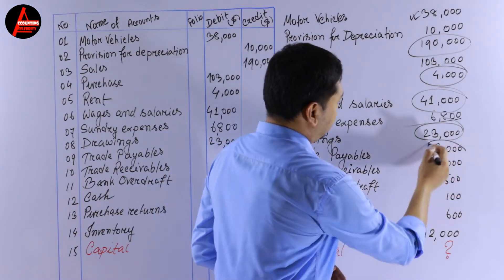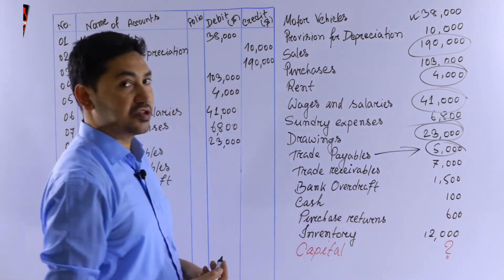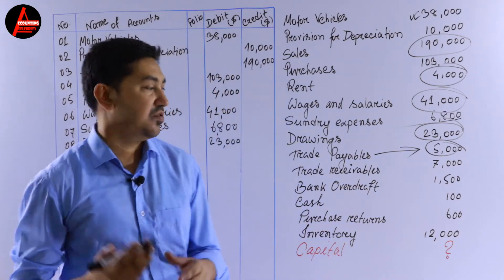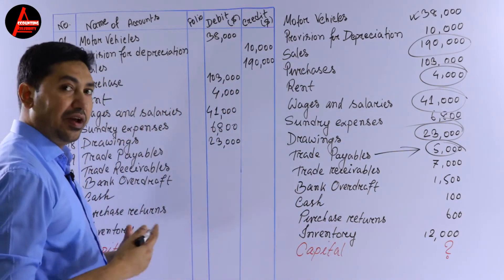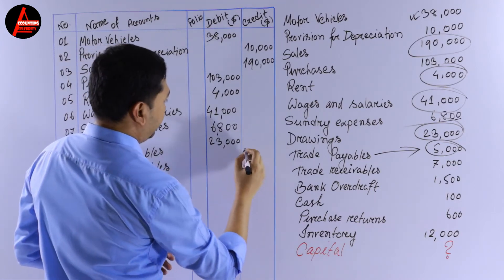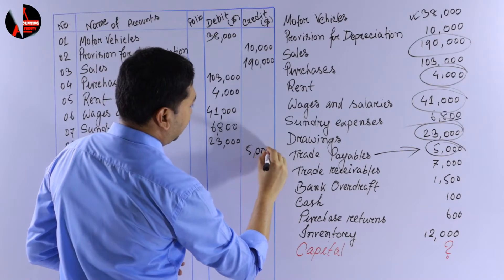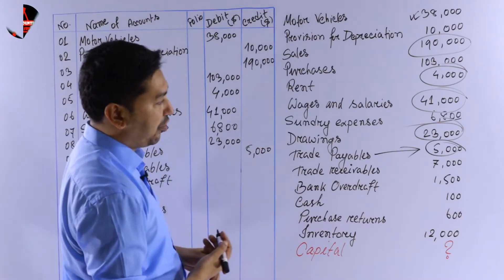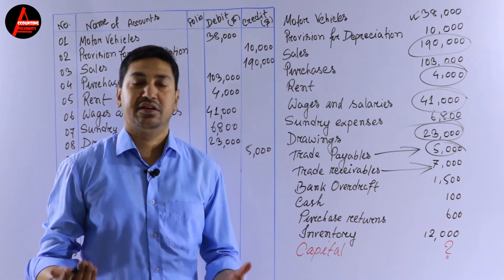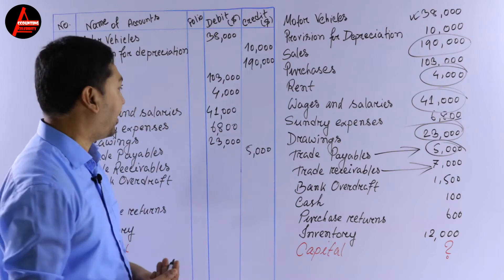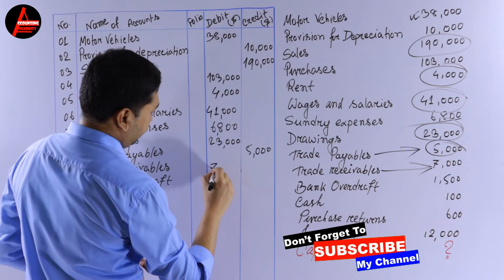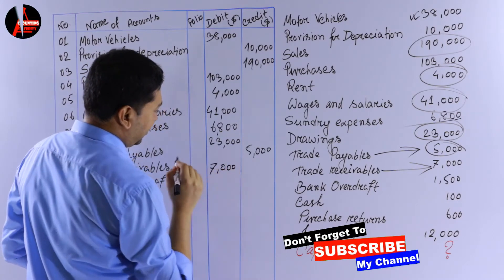Next is trade payables — 5,000 dollars. Trade payables are a liability, so liability is credited: 5,000 dollars on the credit column. Next we have trade receivables: 7,000 dollars. It's a current asset, so it comes on the debit column — 7,000 dollars.